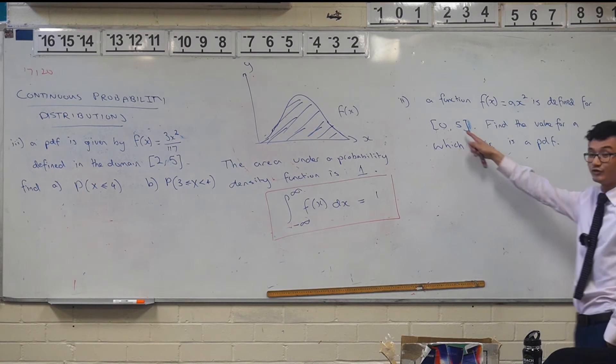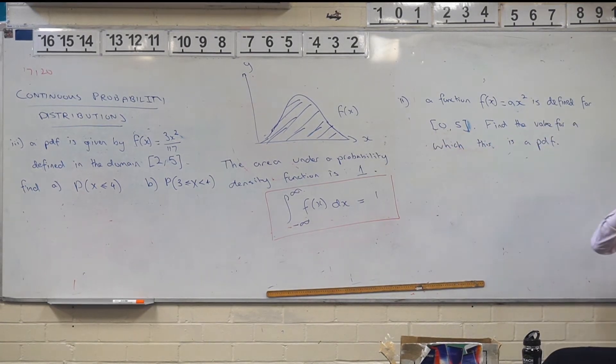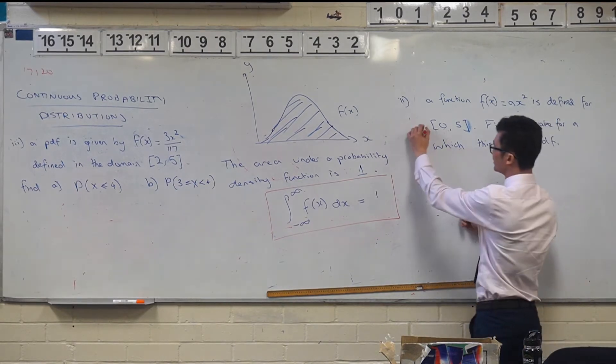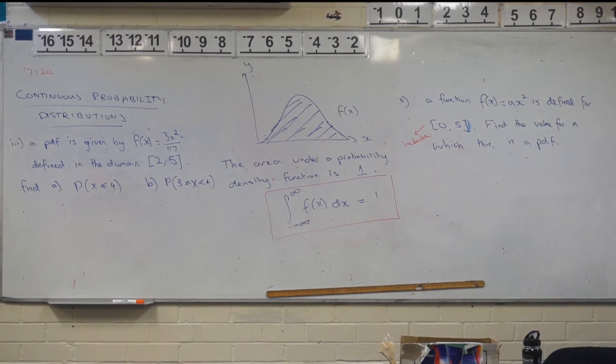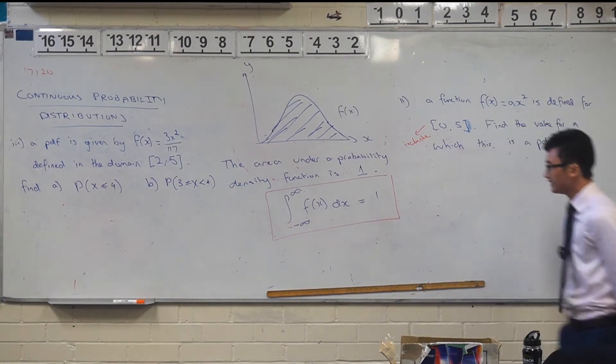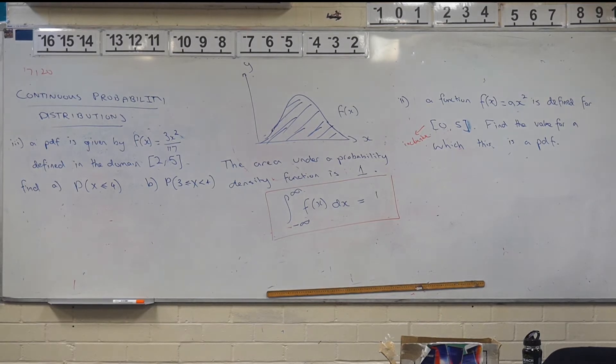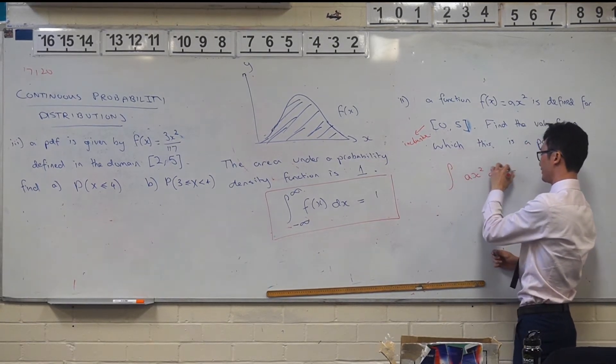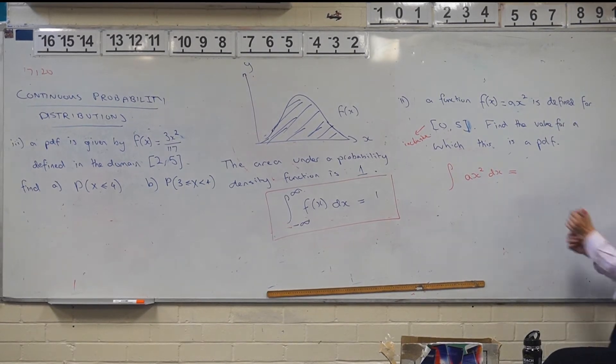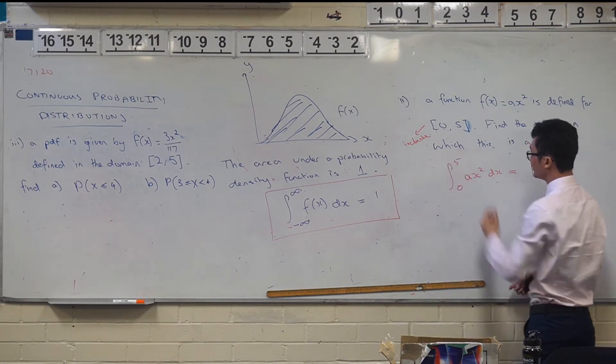A function is defined on this interval and we remember this interval here. Joel, what do the square brackets mean again? Yeah it's inclusive, right? So now find the value for which this is a PDF. Remember your property here, the integral upon which it is defined has to be equal to one. But on what domain does it have to be equal to one? Zero to five, that's right. So zero to five.